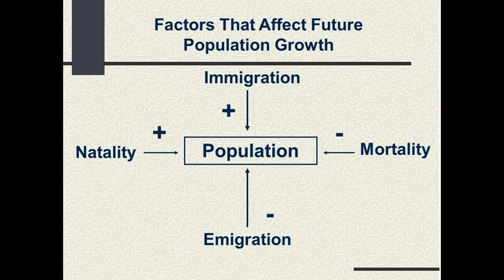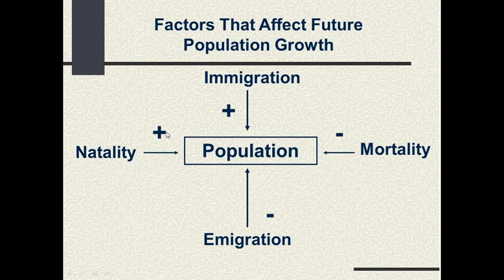Here are the four factors affecting population growth. The first factor is natality — that is, the birth rate. Birth rate enhances and increases population size, symbolized with a plus sign. Natality is the number of births that take place per unit area in the given area, and it automatically enhances the population size.